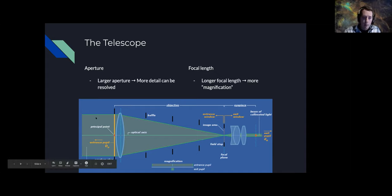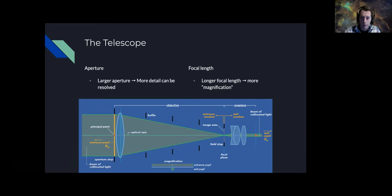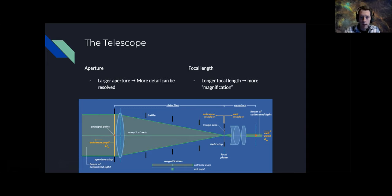You can compare the entrance pupil to the exit pupil — that's a direct scaling of magnification: entrance pupil divided by exit pupil gives the magnification. Likewise, the focal length ratio gives the magnification. For imaging, it's all about how big each pixel is on the focal plane and its relation to the focal length, and that tells you what the image scale is.